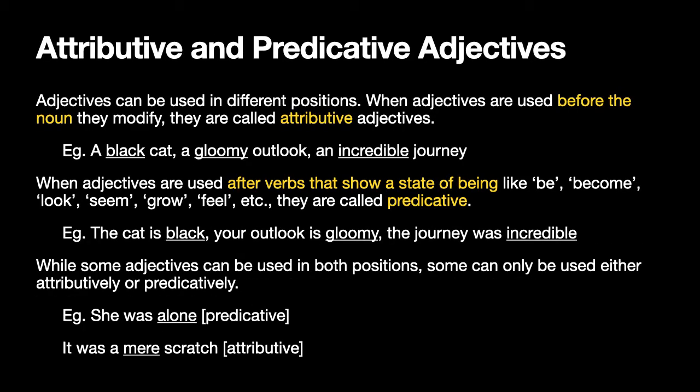Depending on where adjectives appear in the sentence, you can divide them into attributive and predicative adjectives. When the adjective is used before the noun that it modifies, it is called an attributive adjective. For example: 'a black cat,' 'a gloomy outlook,' 'an incredible journey.' In all these, the adjectives — black, gloomy, and incredible — come before the nouns they modify: cat, outlook, and journey respectively. These are examples of attributive adjectives.